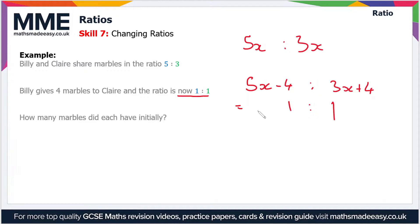We can write this ratio as a fraction with one part divided by the other part. So (5x - 4) / (3x + 4) = 1/1. Now we solve for x.